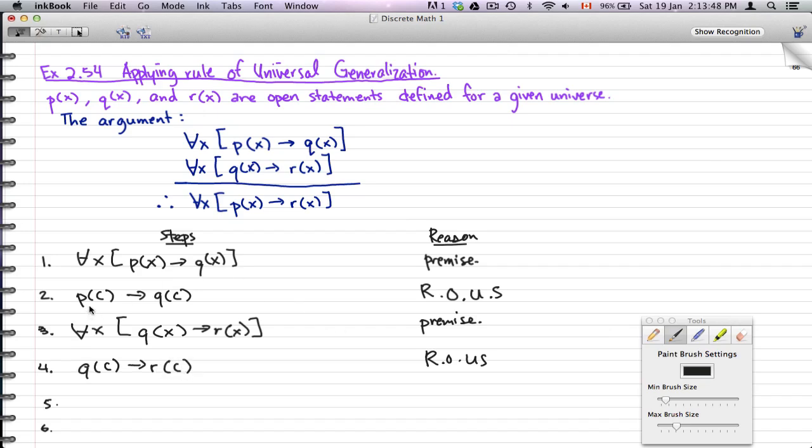And what do you know, p(c) → q(c), q(c) → r(c), that must mean that p(c) → r(c). And that would be using steps two and four, and syllogism, the rule of syllogism. And this would be using step three, that would be using step one.